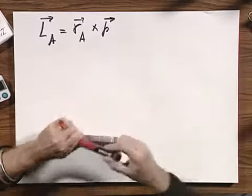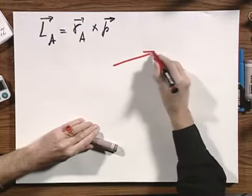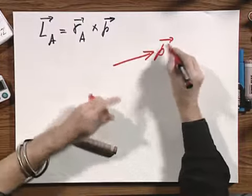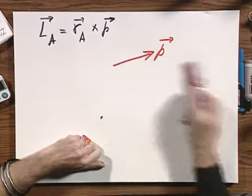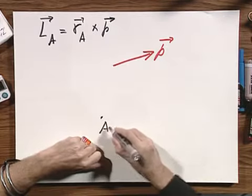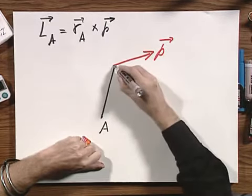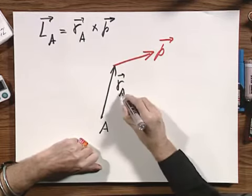Therefore, if I have a certain momentum P, here it is, and I have here a point A, so that this is the position vector R of A.